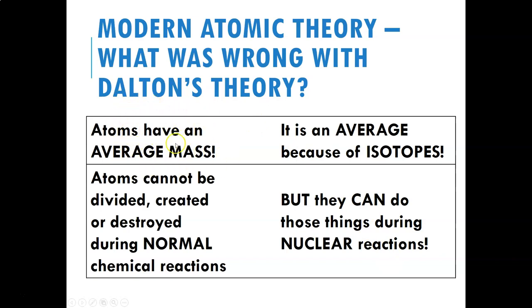We now know that atoms have average masses because of something called isotopes, which we'll look at in a minute. Dalton thought every atom of carbon was the same as every other atom of carbon, and we now know that's not true — they're slightly different versions. Every element has slightly different versions, and we'll learn about that when we learn about isotopes. Also, while you cannot divide up an atom into smaller pieces under normal reactions, you can do that during nuclear reactions. We can smash atoms into pieces and make new atoms that didn't exist before.